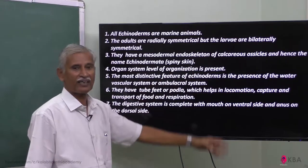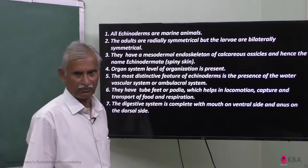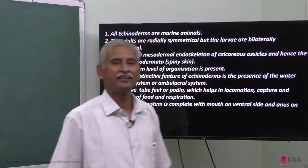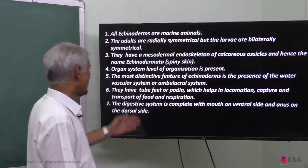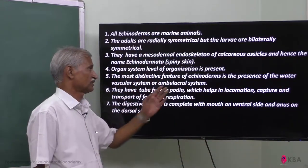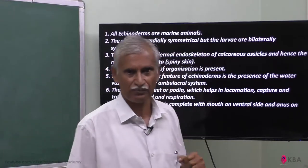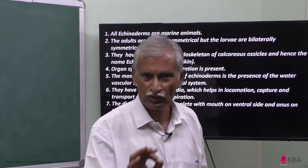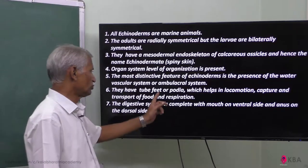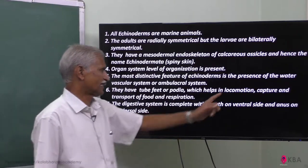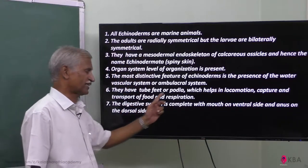Organ system level of organization is present. Most distinctive and very special feature is the presence of water vascular system, also called the ambulacral system. This is very peculiar to Echinoderms. They have tube feet or podia which help in locomotion, capture of food, transport of food, and respiration.